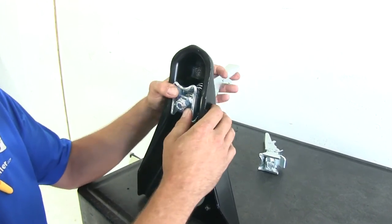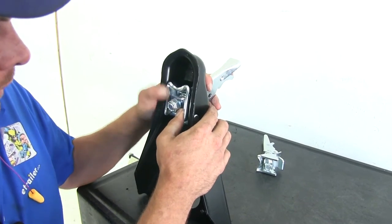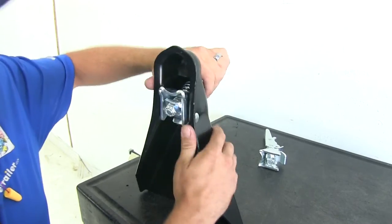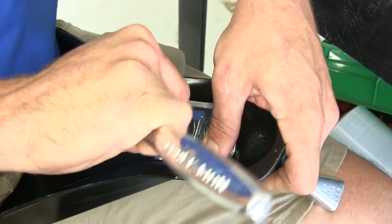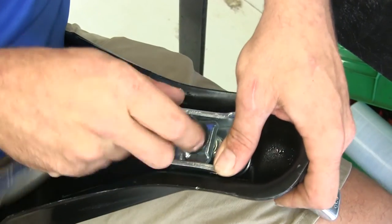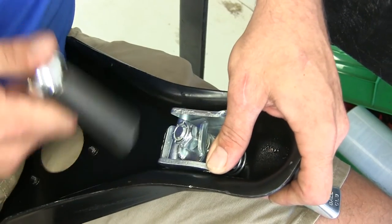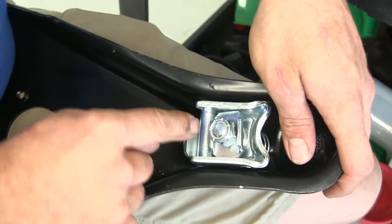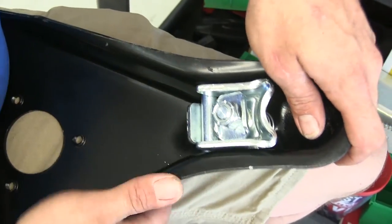We're going to tighten that up until that bolt passes through the threads on our nylon lock nut there. Once that comes through, just align our nut up. You can see that keeper is then going to keep that from being able to rotate either way.